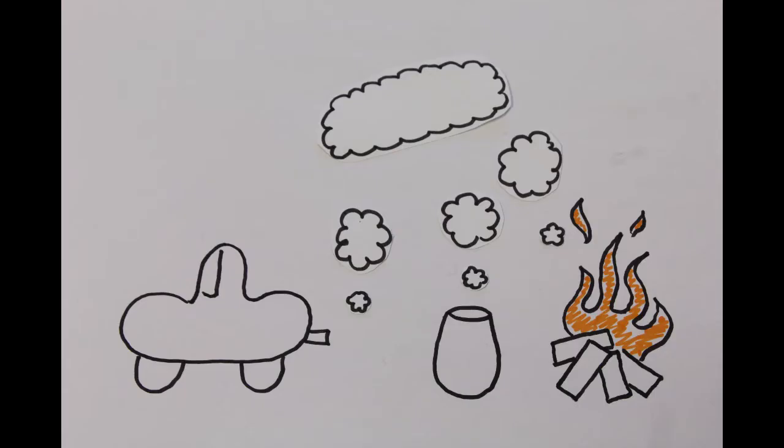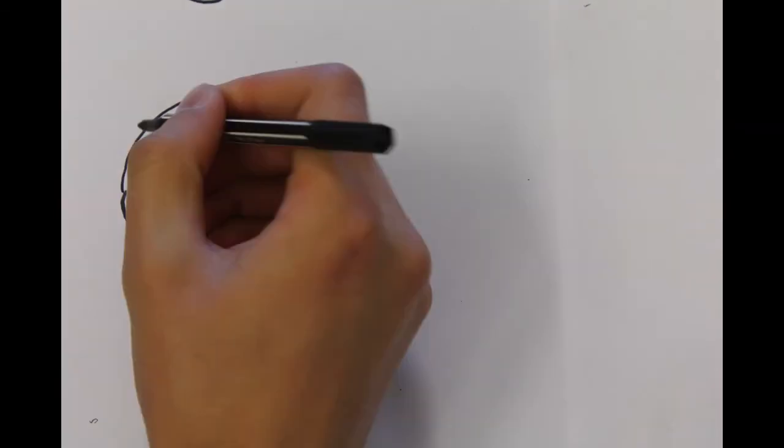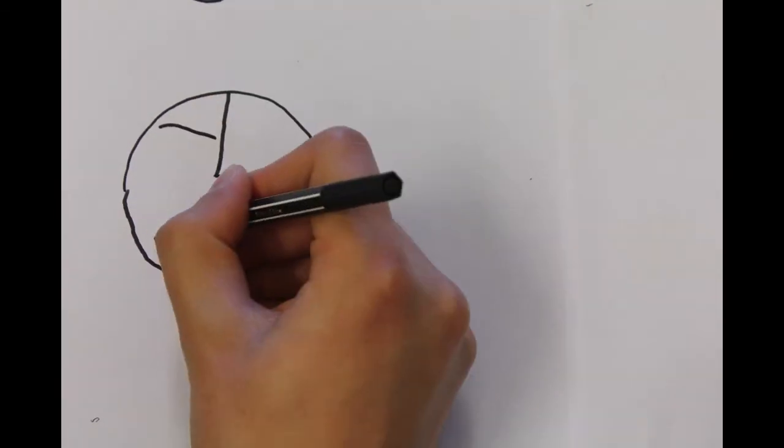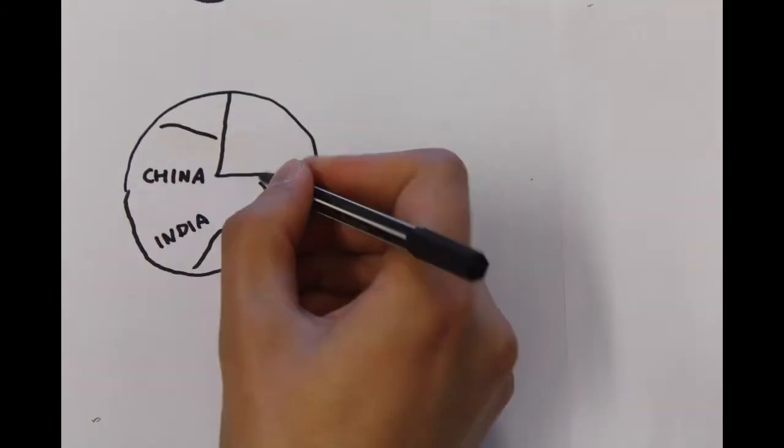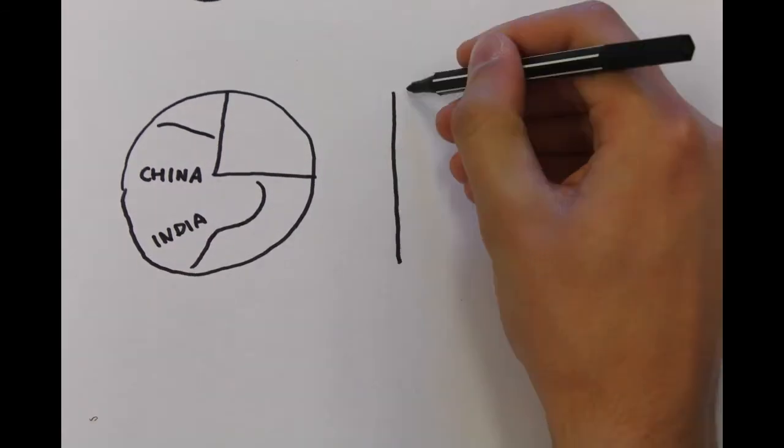The majority of all soot emissions come from the burning of biofuels, like wood, in a tropical zone. 75% of all soot is produced in China and India, which is also where a lot of the problems caused by soot emissions occur.